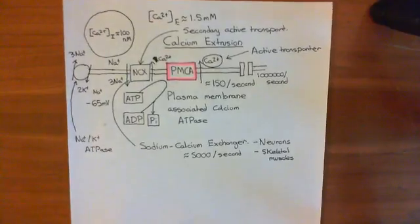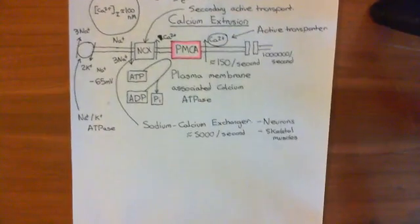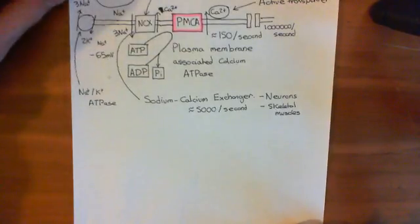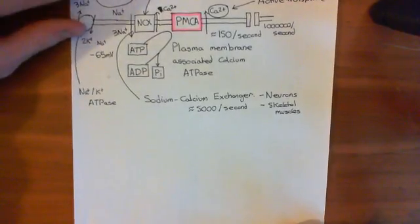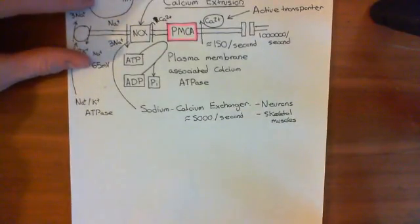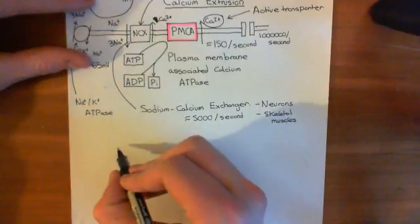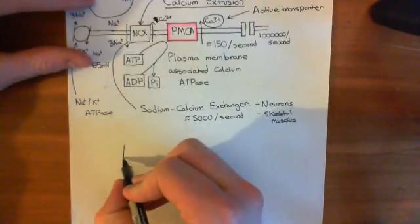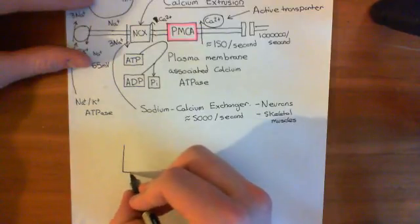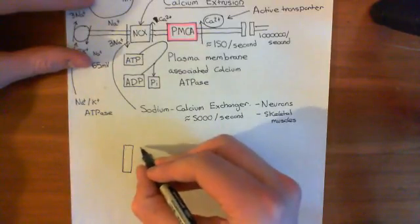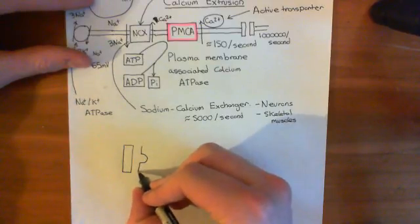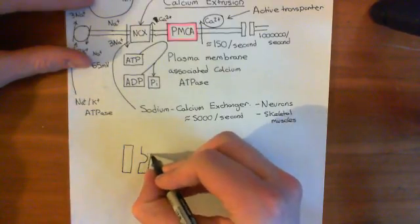Let's have a look at how this protein actually works. This goes back to what we discussed in the first video about how pumps work. In order to have a pump, you have to have two gates. A good cartoon model for the sodium-calcium exchanger is we can draw the pore like so, with a binding site inside, and then two gates.